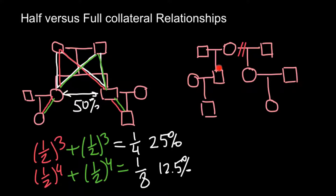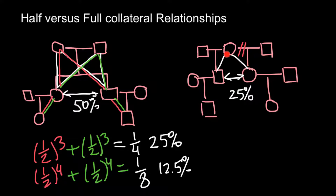Now let's compare with the half-sibling scenario. Two half siblings share the same mother but have different fathers. Another example would be half siblings sharing the same father but different mothers. In our example, these two half siblings share genes they got from their mother. The coefficient of relationship between two half siblings is one-half to the power of two, which equals one-quarter — so they share 25% of genes inherited through their common parent.